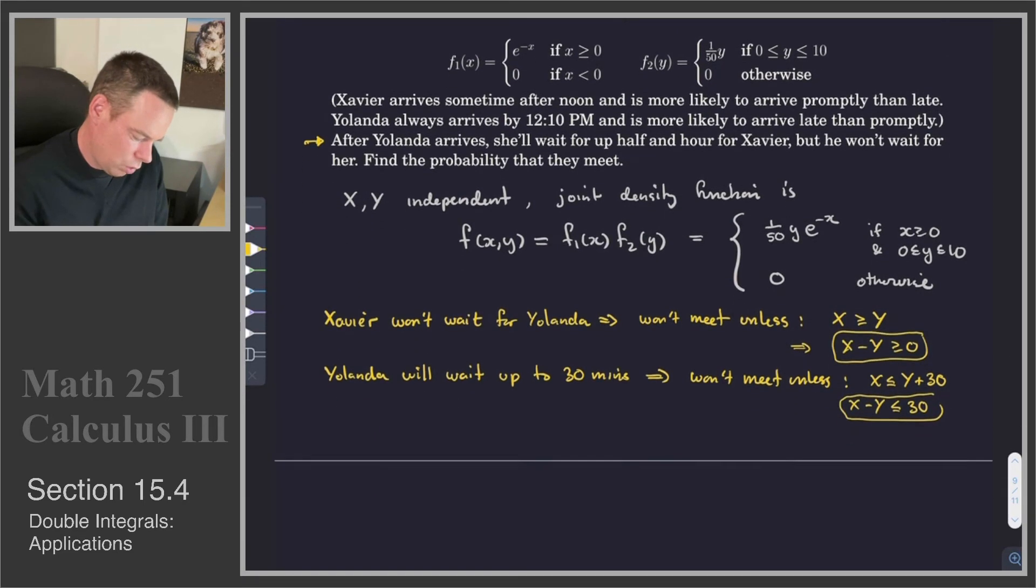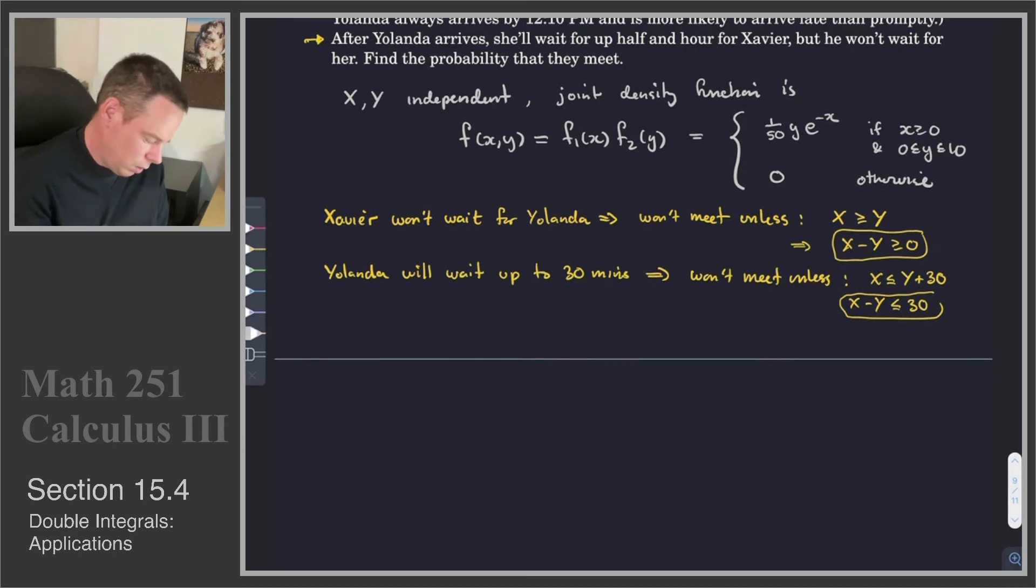Now let's get a sketch of this region. The region we're integrating over, in other words, the set of all points for the random variables X and Y, the set of all values for X and Y which will allow them to meet are the following. We need X minus Y to be bigger than 0. So I'm going to draw the line X equals Y. And we need X minus Y to be less than 30. So that's a parallel line but passes through the point 30 here.